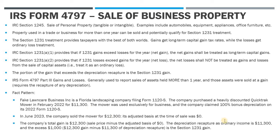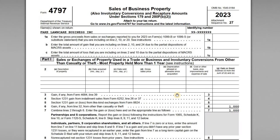The adjusted basis was zero, so the total gain on the sale is going to be $12,300 — the sale price minus the adjusted basis. The depreciation recapture, which is ordinary income, is $11,300, because we took $11,300 of bonus depreciation in 2022. The excess thousand dollars is going to be that Section 1231 gain. Let's have a look at the return and see how all these numbers flow through on not just the 4797 but also the rest of the 1120S.